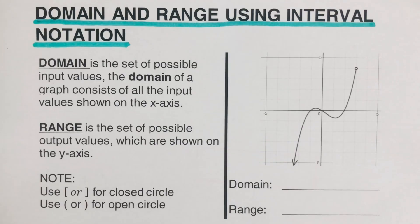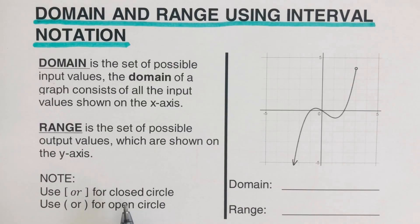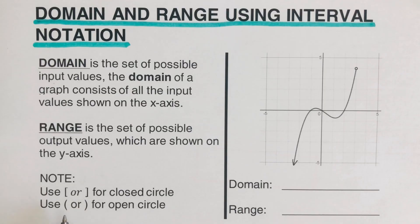There are some notations we need to remember when writing interval notation for domain and range. First, if you get a closed circle, we are going to use a bracket — a closed circle means that value is included. If we have an open circle, the open circle tells us that value is not included, and we use parentheses. Also remember: if we have infinity, we use parentheses because infinity goes forever and we don't know what value that is.